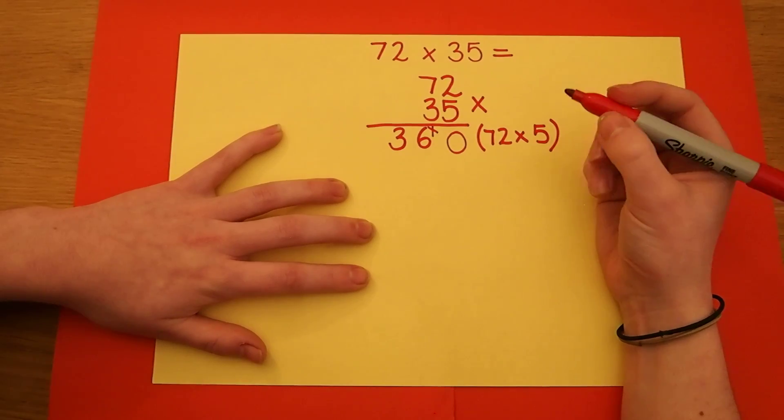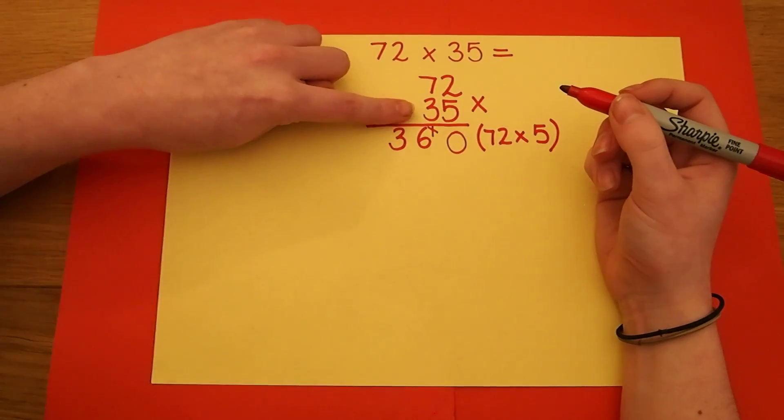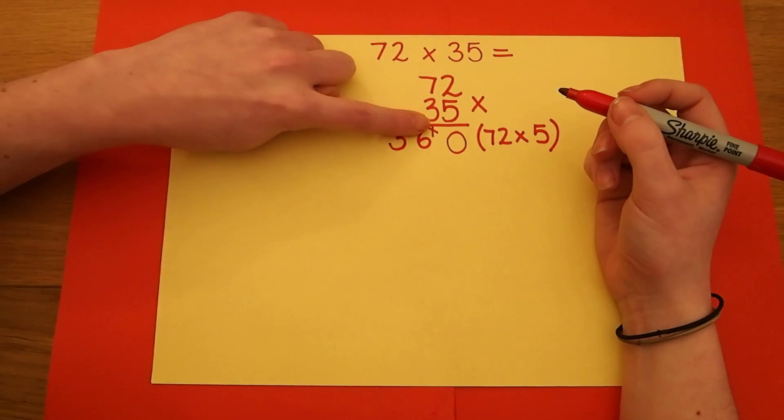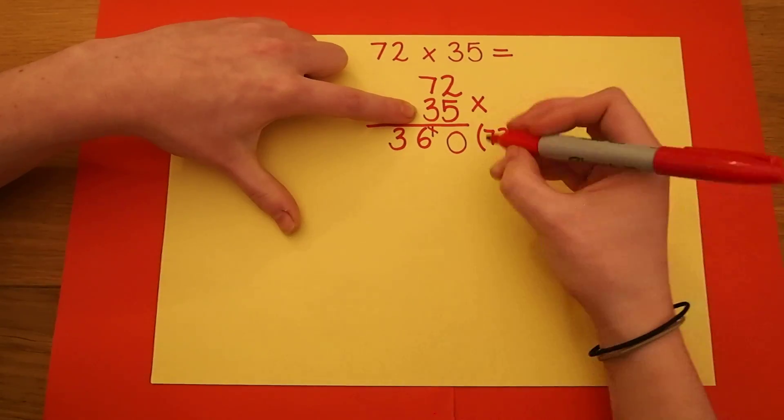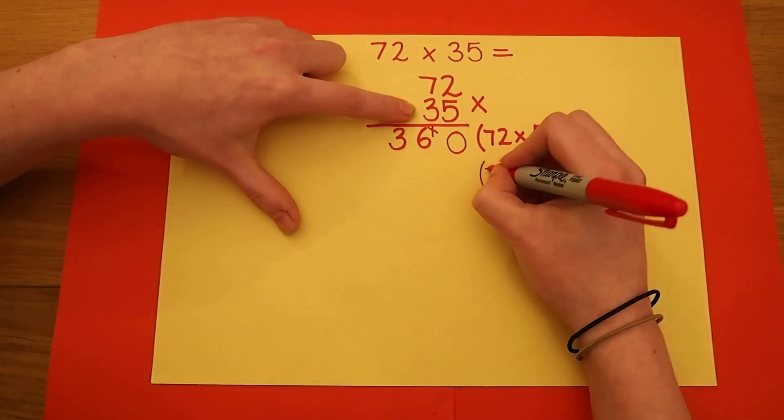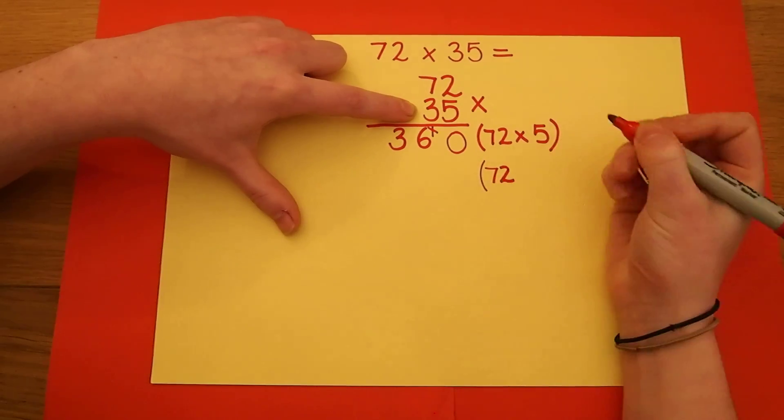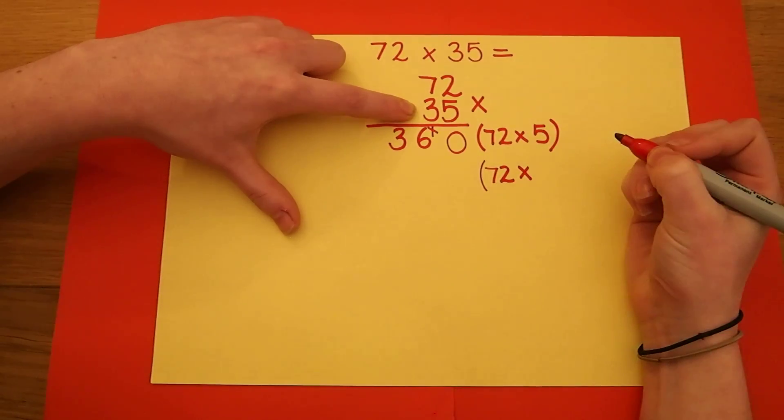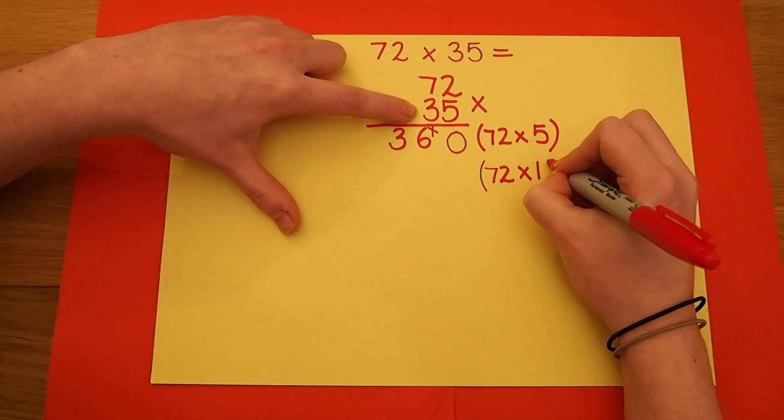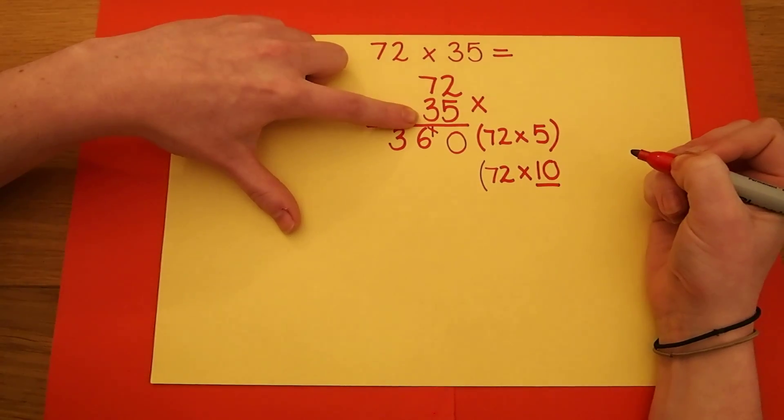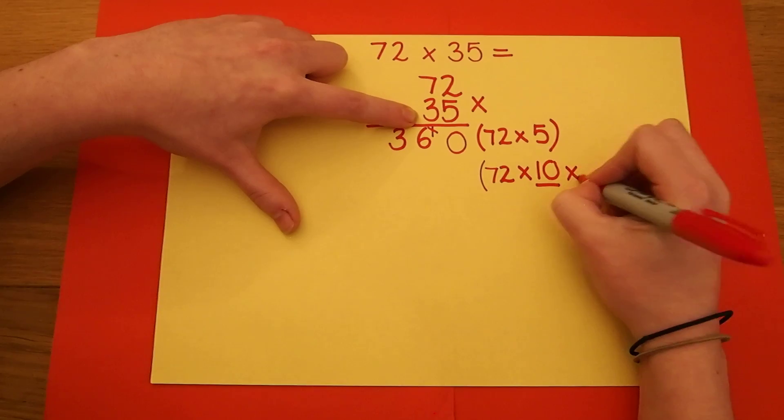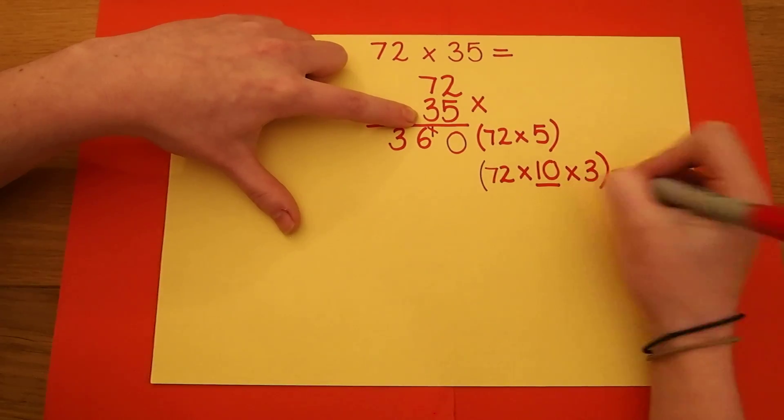I then carry on with the calculation. I need to multiply 72 by the 3. So in the brackets I'm going to write 72 multiplied by 10 because I'm timesing it by the number in the tens column. And then I can multiply it by 3.